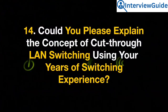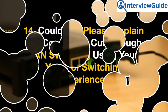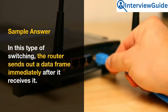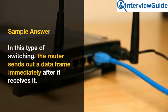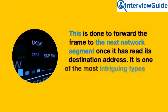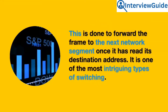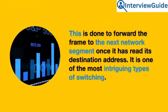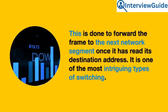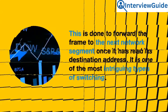Question 14: Could you please explain the concept of cut-through LAN switching using your years of switching experience? In this type of switching, the router sends out a data frame immediately after it receives it. This is done to forward the frame to the next network segment once it has read its destination address. It is one of the most intriguing types of switching.